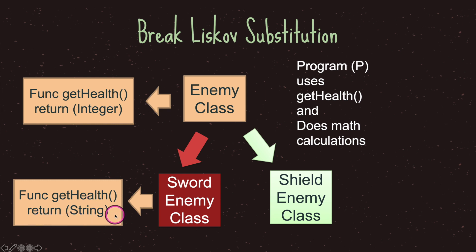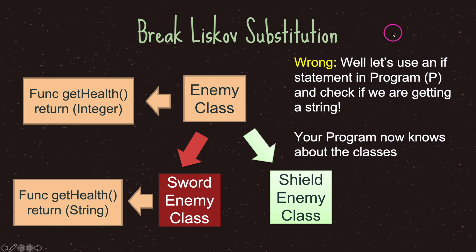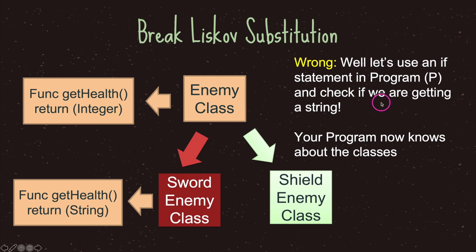However, our sword enemy class decided to override the function get_health and return a string — that's how you break the substitution principle. If program P now points to the sword enemy class and calls its get_health function, it's going to receive a string. But our program P is doing math calculations, so your program P will throw an error.